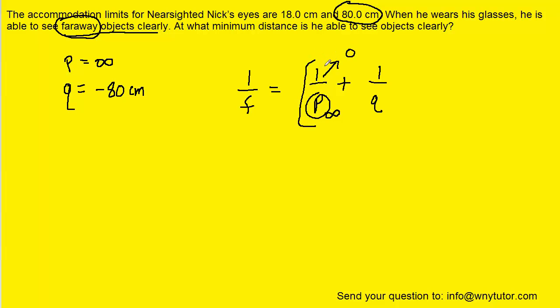And so this entire quantity here, 1 over p, can be eliminated from the equation. We could then plug in the image distance of negative 80.